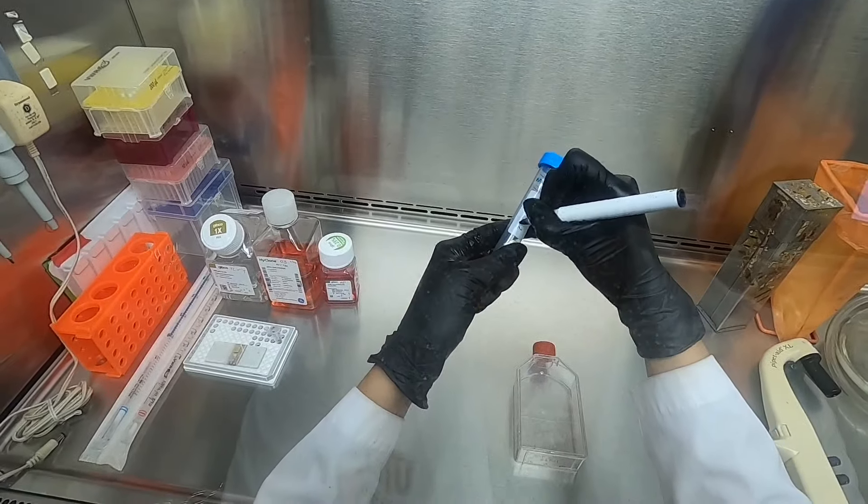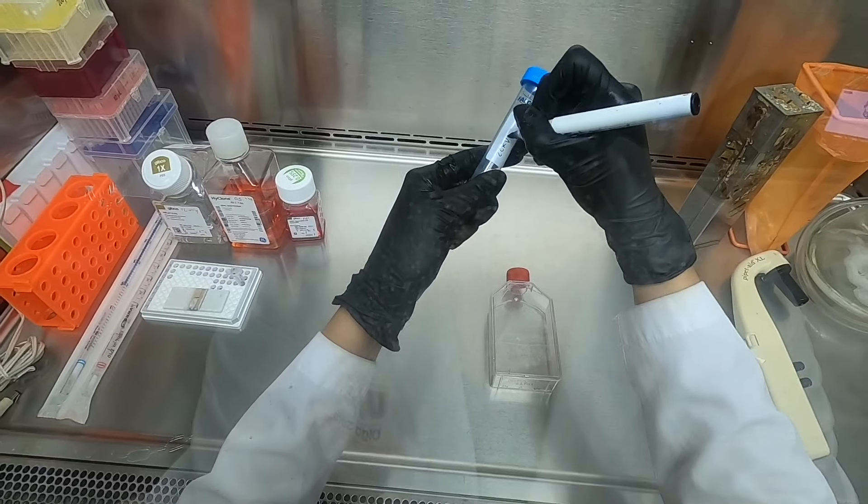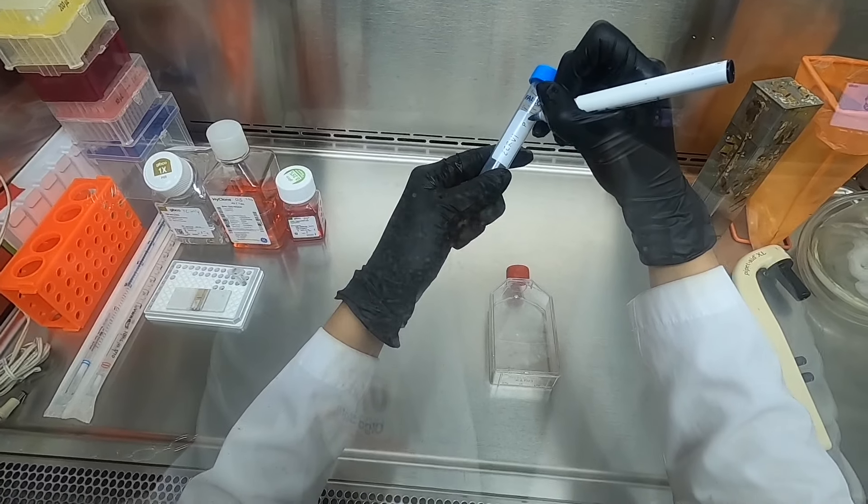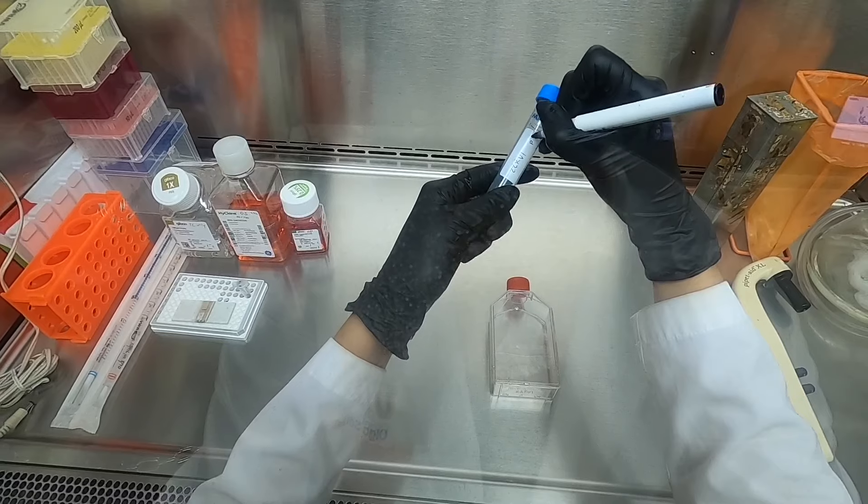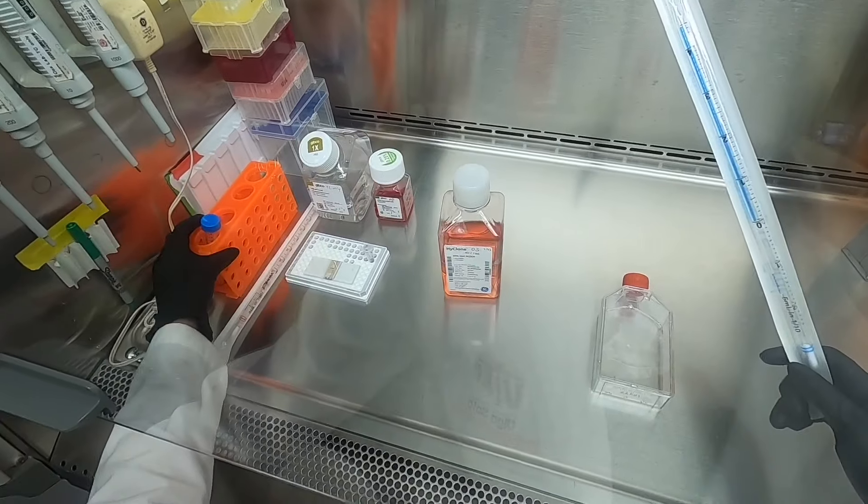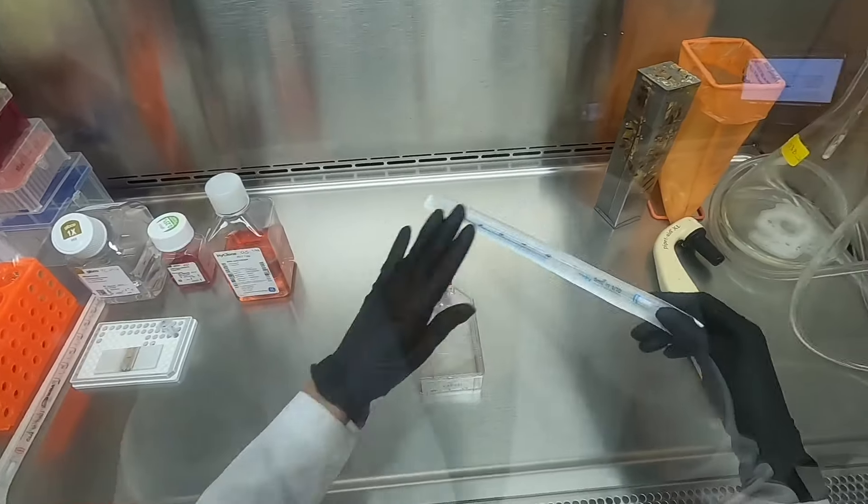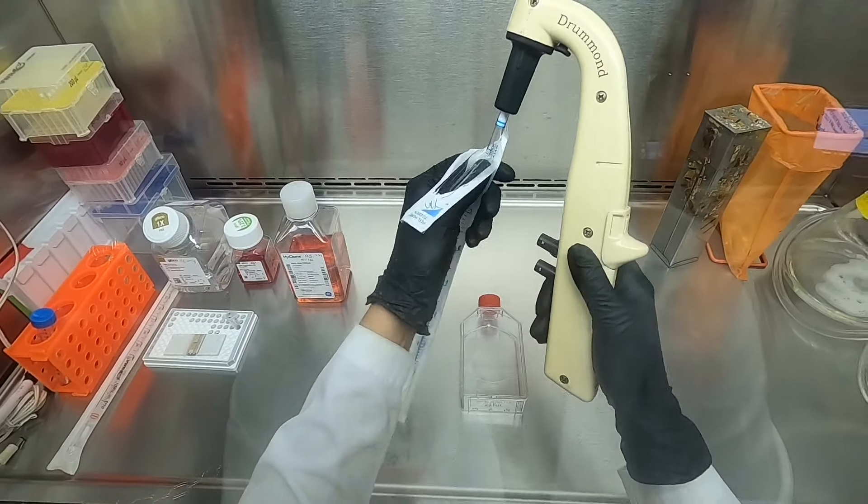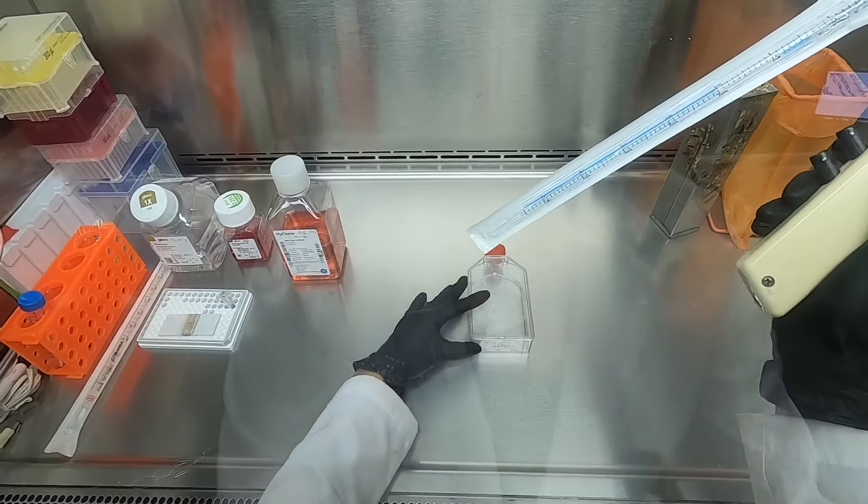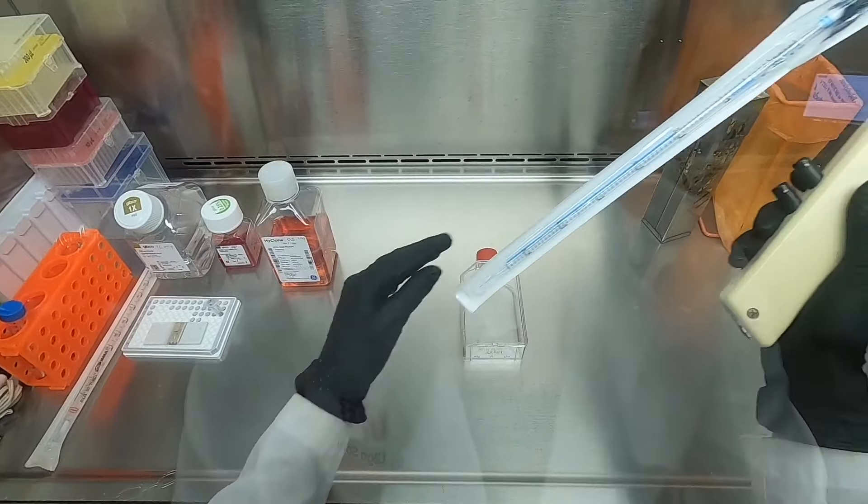Here we are labeling our conical tube with the name of the cell line. It is important to label all of the flasks with the name of the cell line, the passage number, the date, and your name.